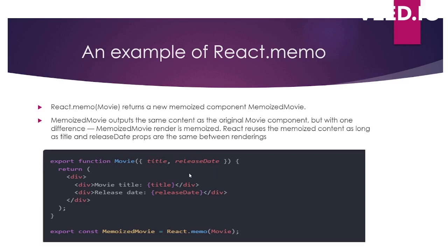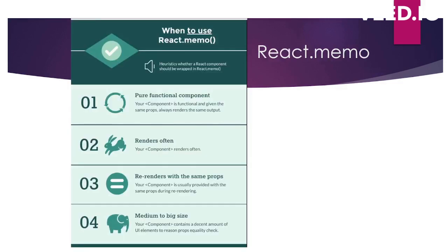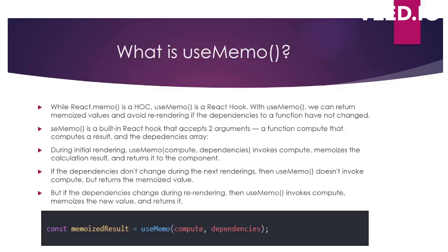This Movie component will be memoized and will return the same values if there's no change in its two props — title and release date. Remember, whenever you use React.memo you are using extra memory, trading memory for performance. React.memo should not be overused. Use it only if you need a pure functional component, if the component renders often with the same props, or if the component is medium or large in size.